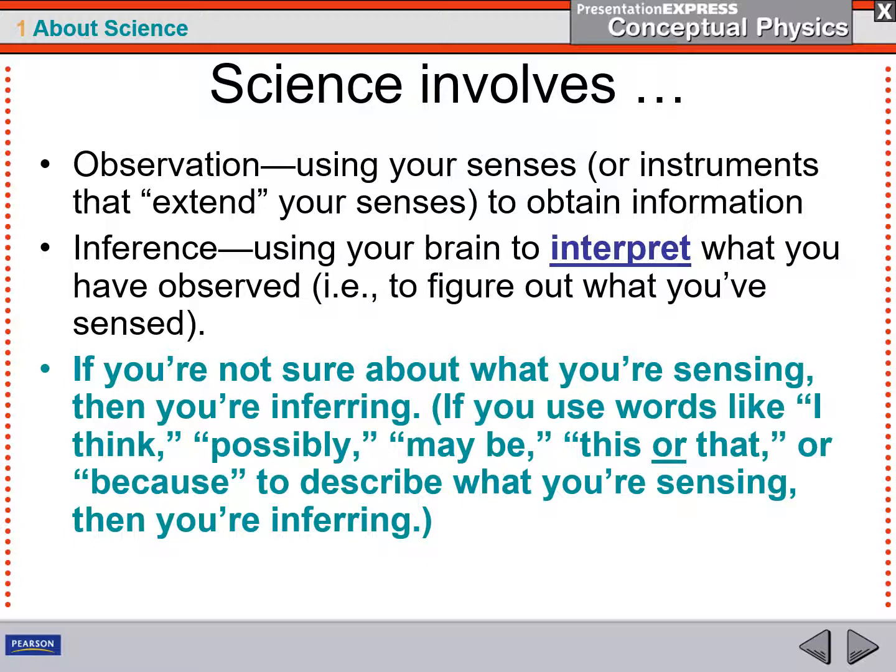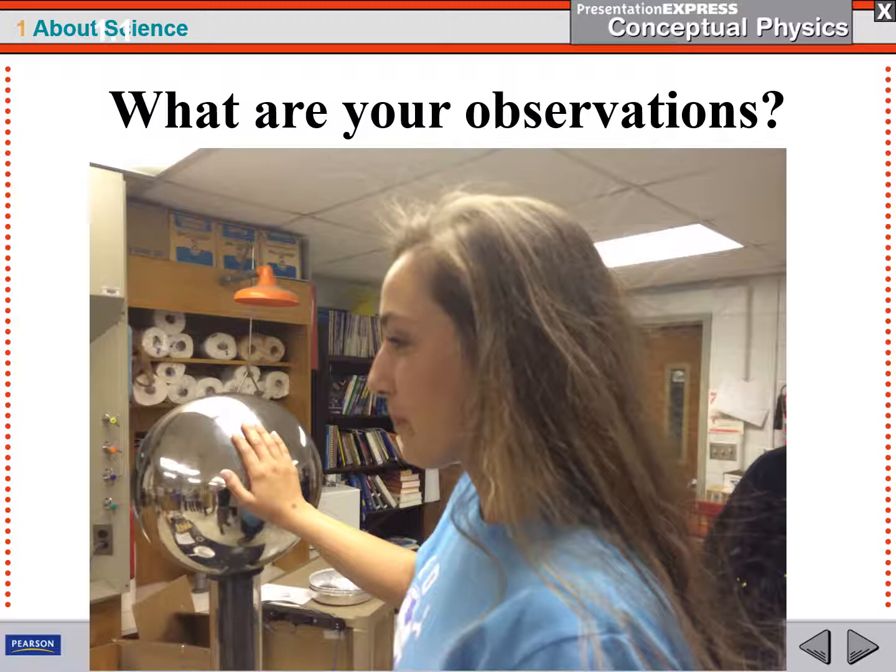If you're not sure about what you're observing, what you're sensing, then you're making an inference. If you use words like, I think it means this, it possibly could be this, it may be, it could be this or that. Or this happens because of some reason. You're making an inference, not an observation. An observation should be something that everybody can agree on.